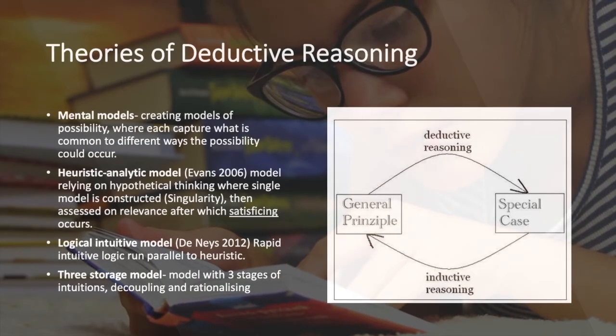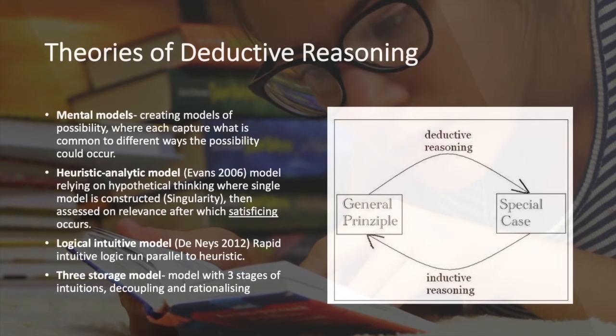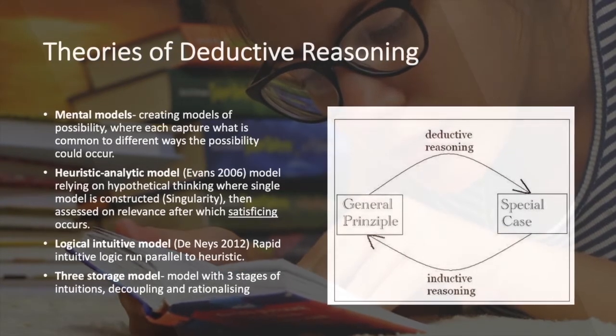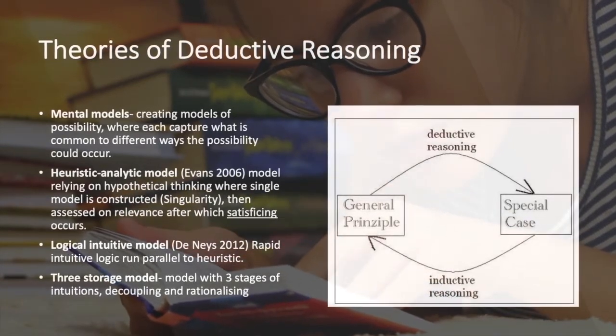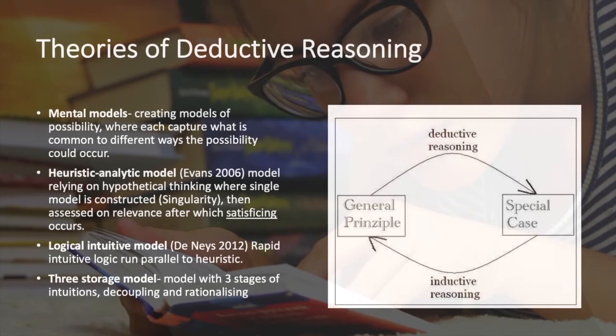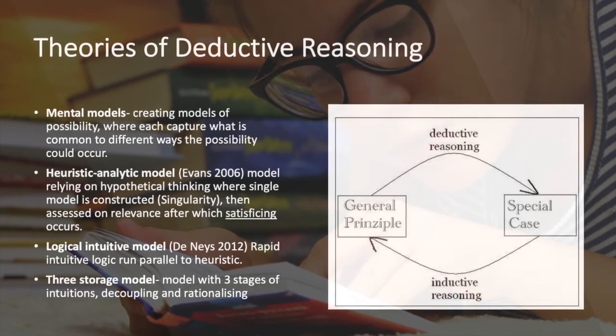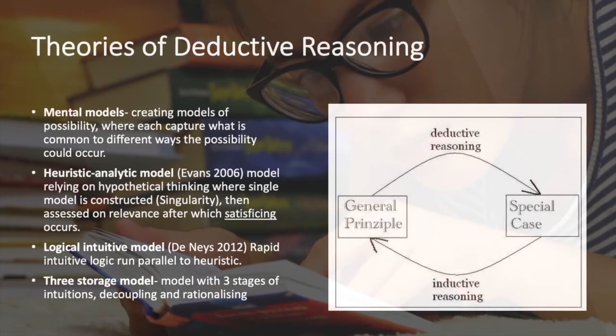Heuristic analytic model was proposed by Evans 2006. It's a model that relies on hypothetical thinking where single models are constructed, often called a singularity, then assessed on the relevance after which satisficing occurs.